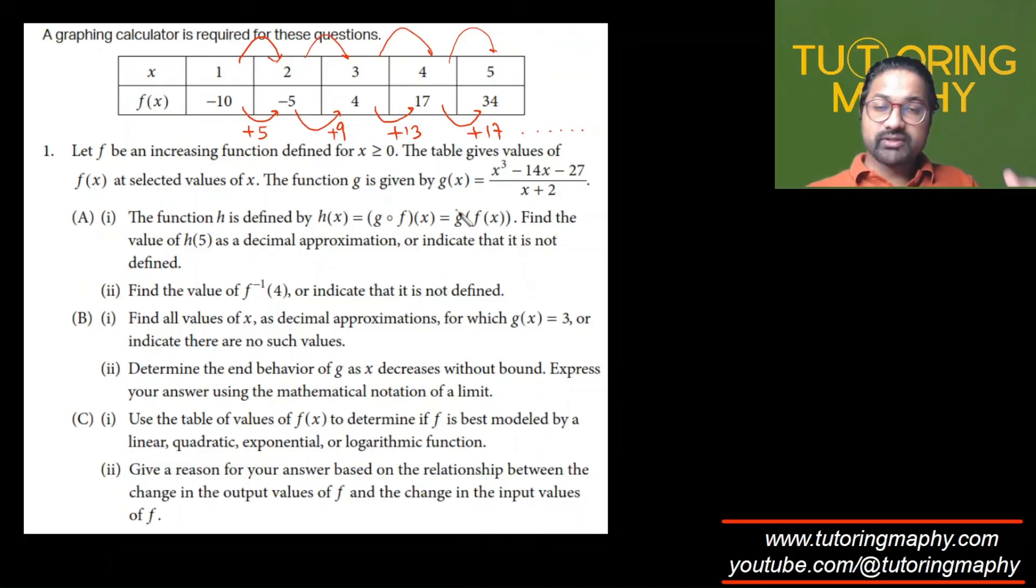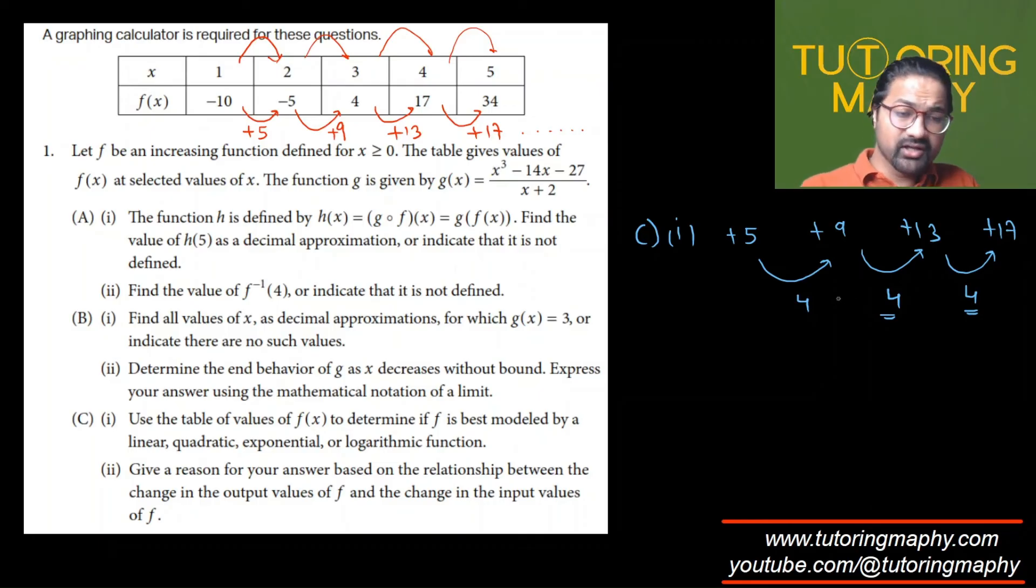Let's check quadratic. For quadratic, the second difference should be the same. First differences are 5, 9, 13, 17. The second difference is the difference of the differences: 9 minus 5 is 4, 13 minus 9 is 4, 17 minus 13 is again 4. This is the same. Since the second difference is same, this is the condition for a quadratic function.